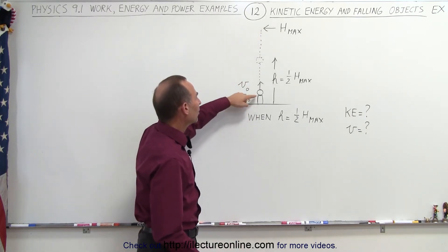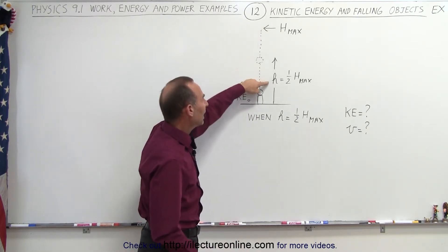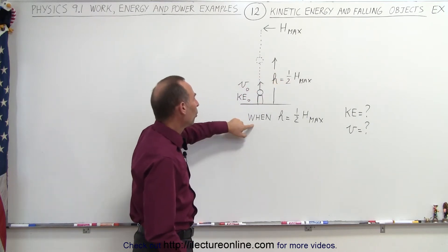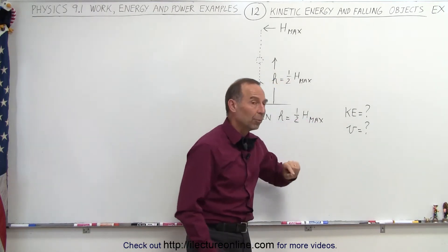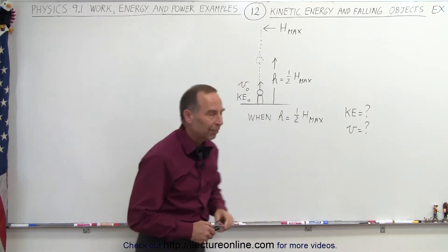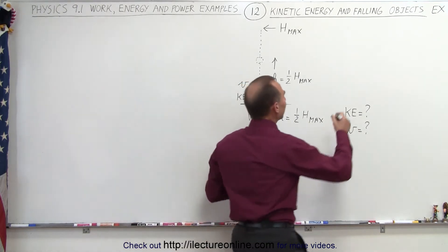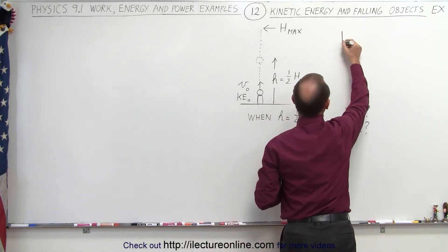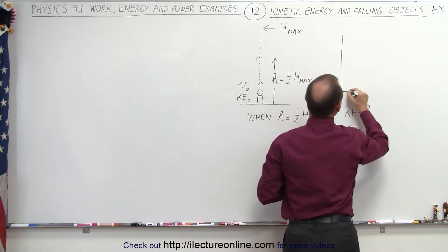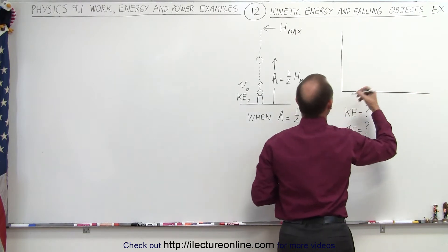Now when the object has reached half the height, where H is half H-max, what will be the kinetic energy at that moment and what will be the velocity at that moment? Well, what we have to realize again is the linear relationship between the change in kinetic energy and the change in potential energy versus height.